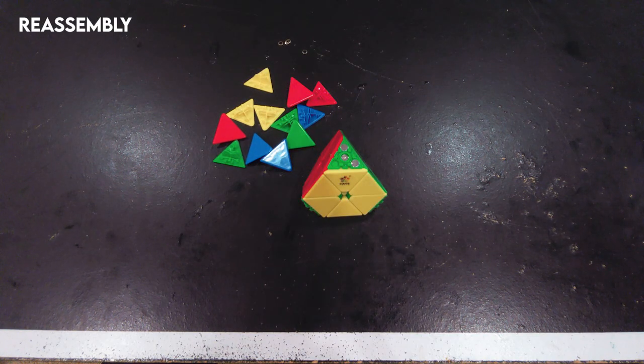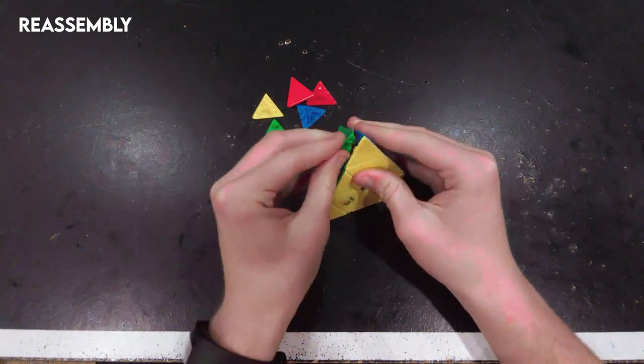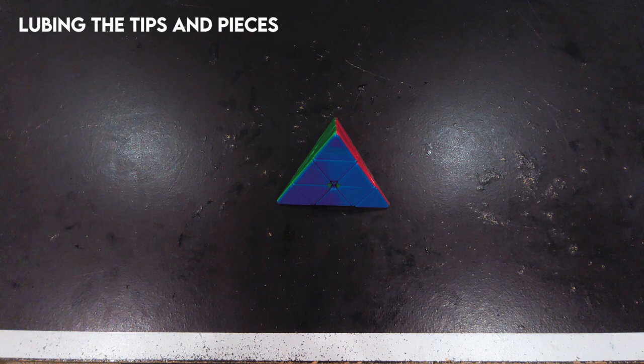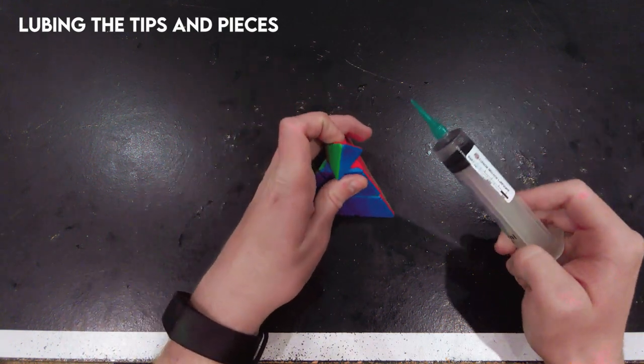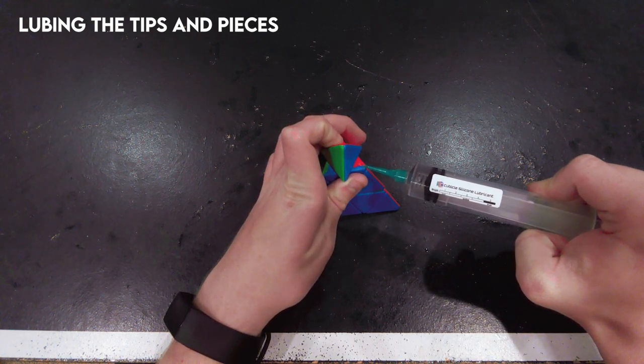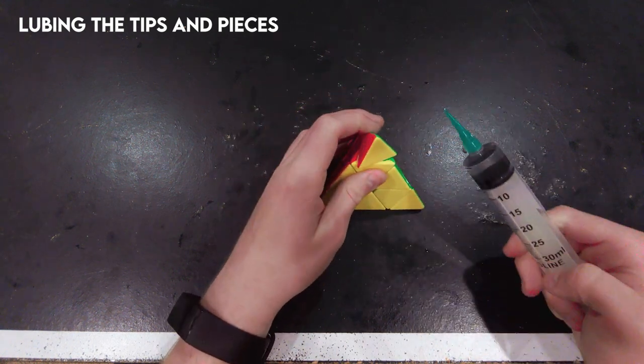These tensions are looking pretty good, so it's time to reassemble it. Now that it's fully assembled, we can finish lubing the tips and lube the pieces. For the tips, I just like to turn them halfway and put a little bit of weight five in one of the corners. This just makes them feel smoother and more consistent.